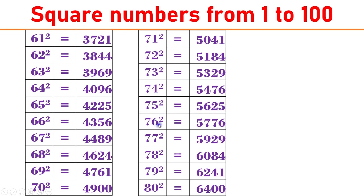76 square equals 5776. 77 square equals 5929. 78 square equals 6084. 79 square equals 6241. 80 square equals 6400.